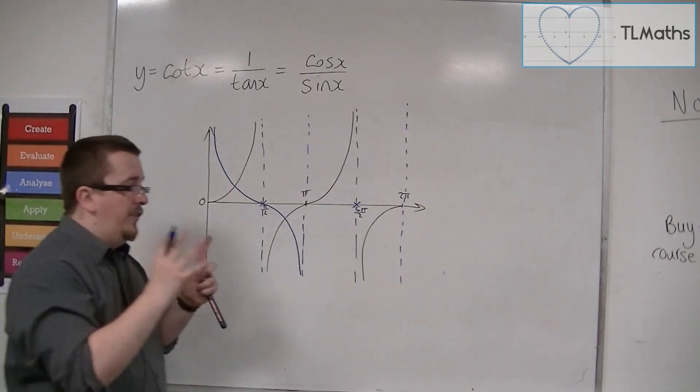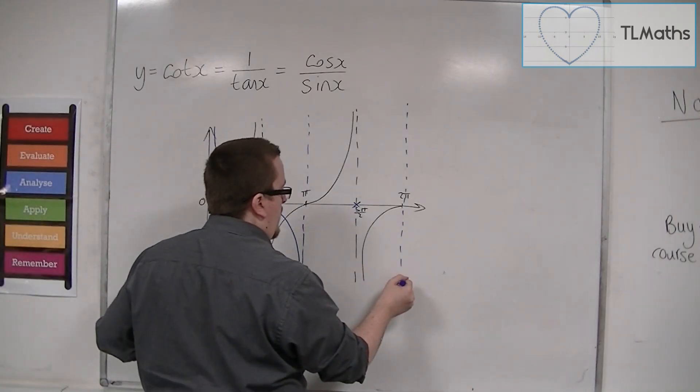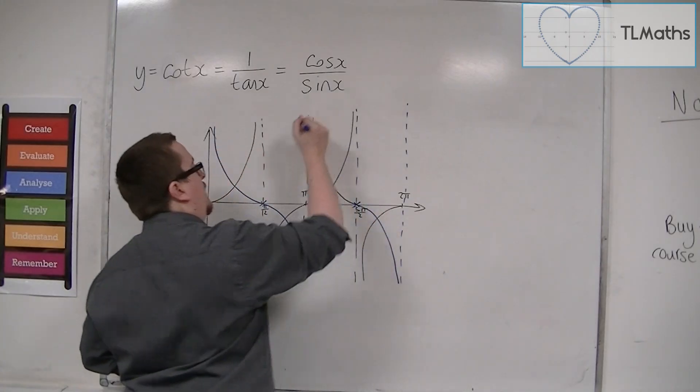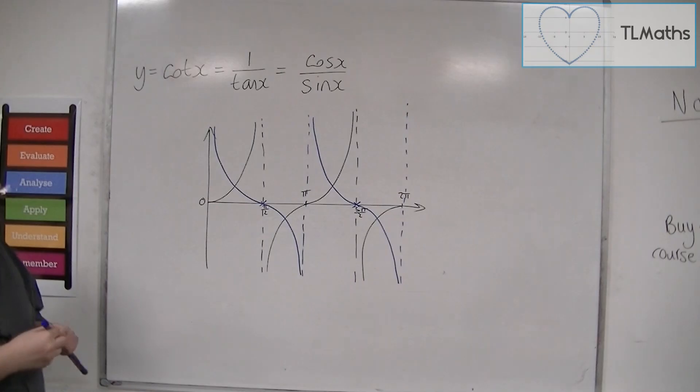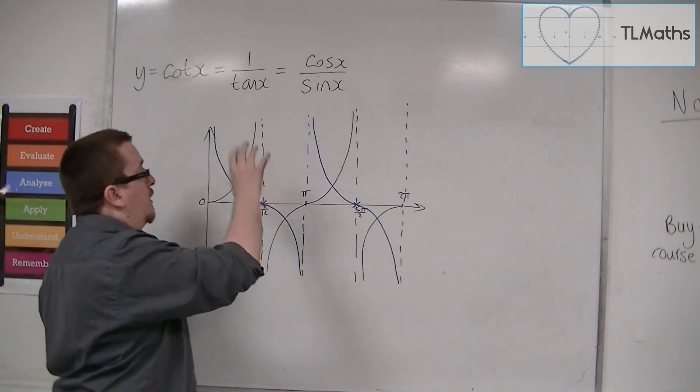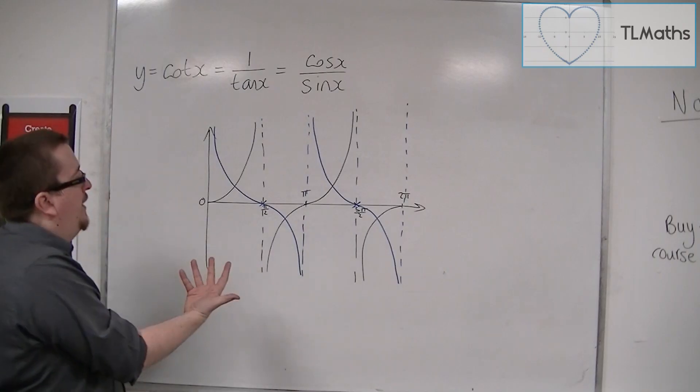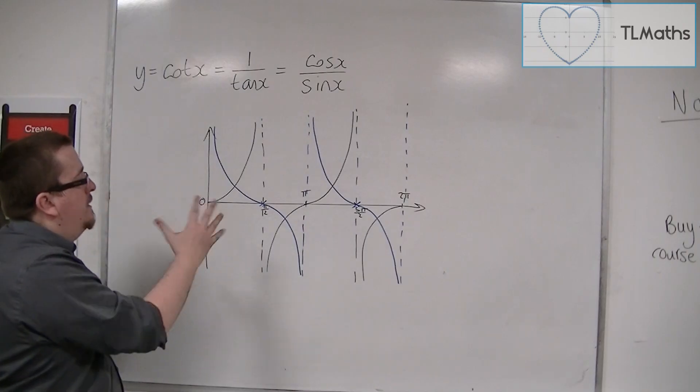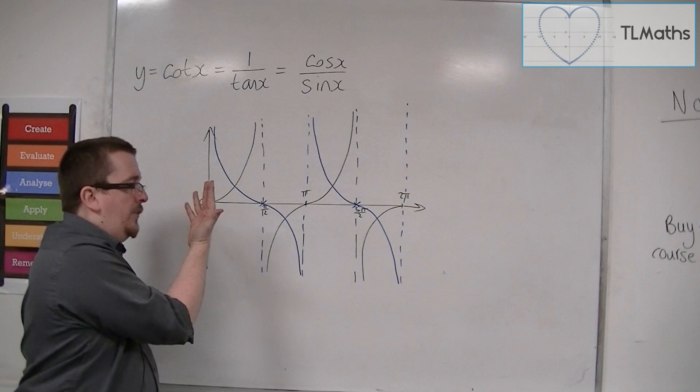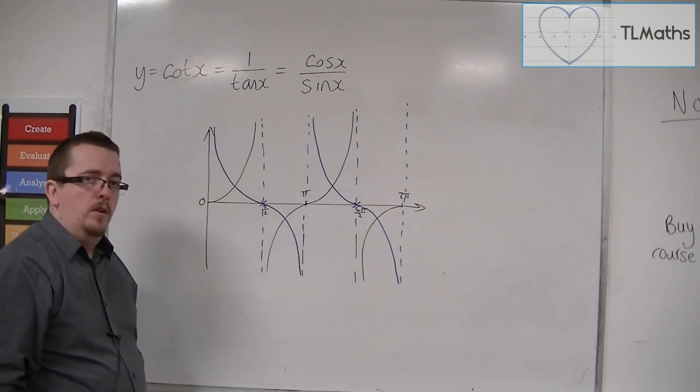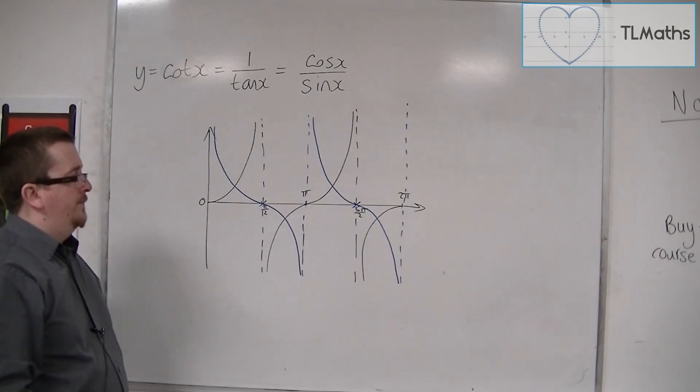And in a similar way, in a similar argument, the curve must look something like that. And so tan, or cot rather, is like a reflection of tan in the y-axis and also a translation along the x-axis. So this is what cot looks like.